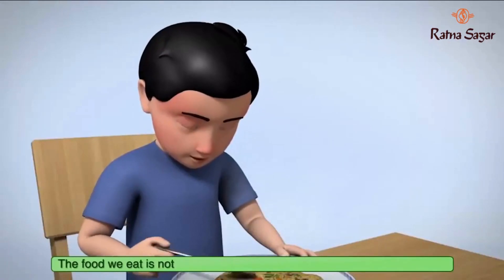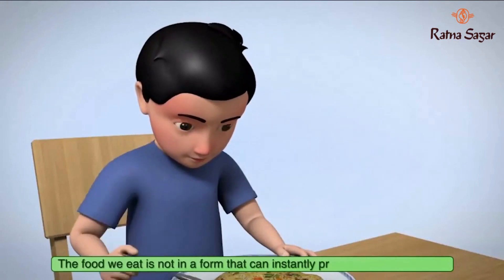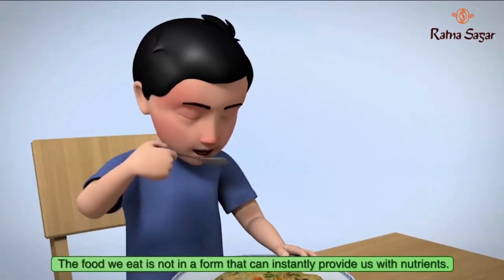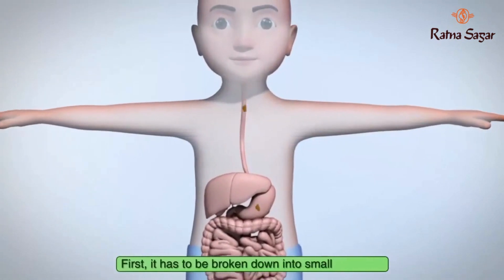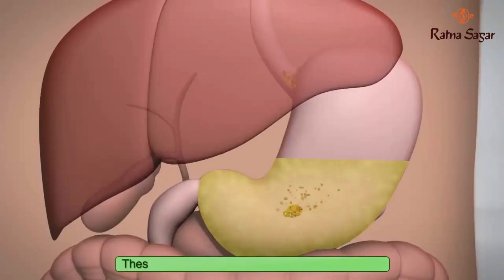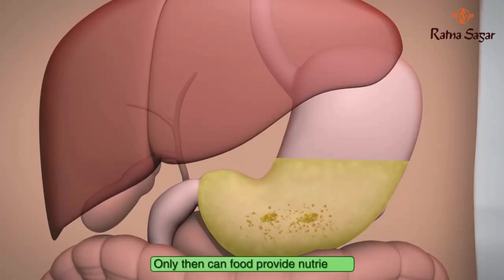The food we eat is not in a form that can instantly provide us with nutrients. First, it has to be broken down into small particles. These particles must then be changed into simple, soluble forms, which the body cells can absorb. Only then can food provide nutrients.